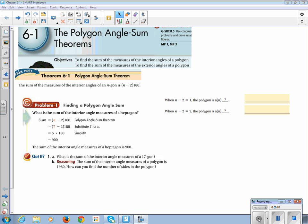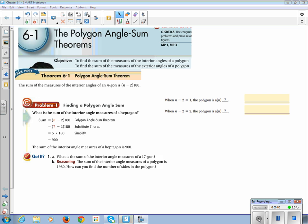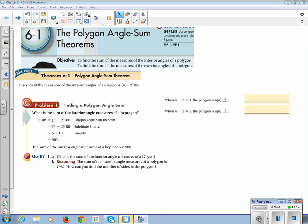All right, so this is Geometry Chapter 6, Section 1. It's the Polygon Angle Sum Theorems. So we're going to look at the interior angles of a polygon and find when we add them all together what they equal. And we're going to be looking at the exterior angles of a polygon and when you add them all together what those equal.